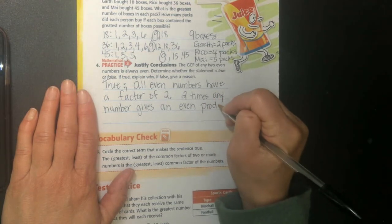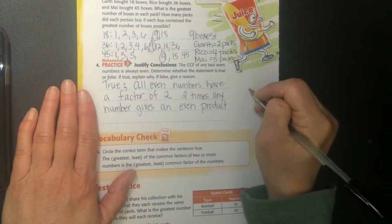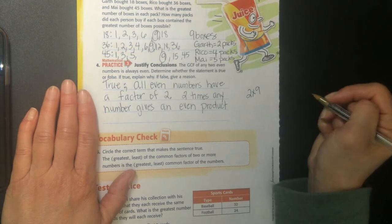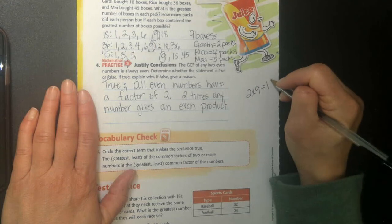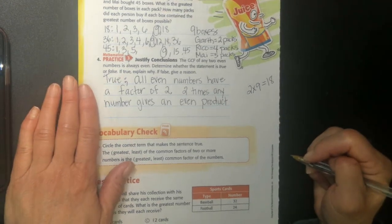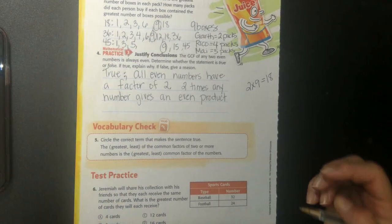And two times any number gives an even product, right? If I multiply two numbers together, two times nine. Nine's an odd number. But when I multiply it times two, it becomes 18 is an even number, right? I hope you guys remember your even numbers.